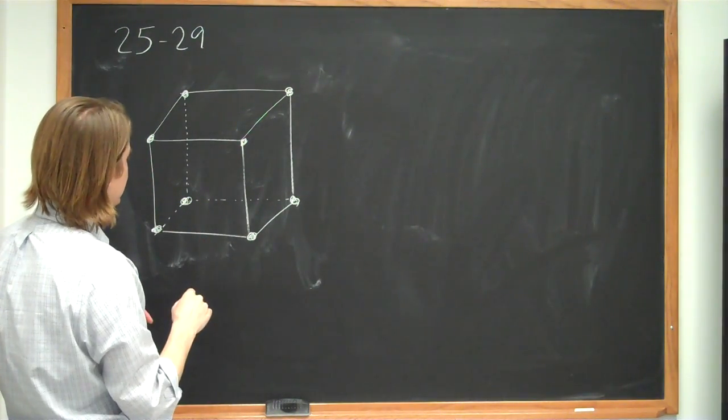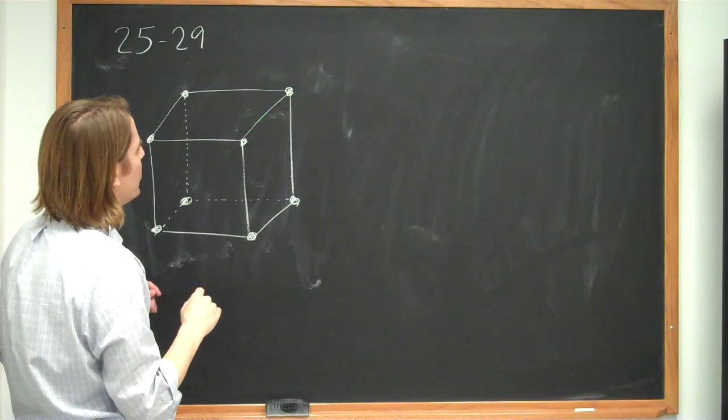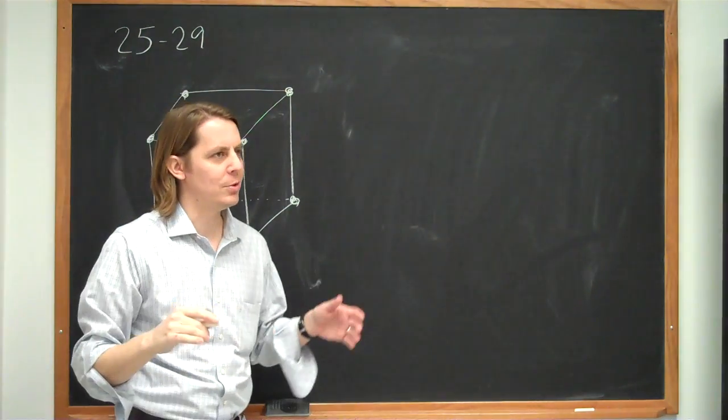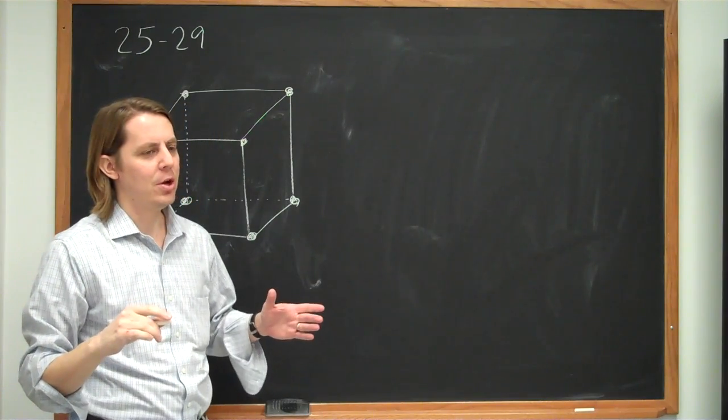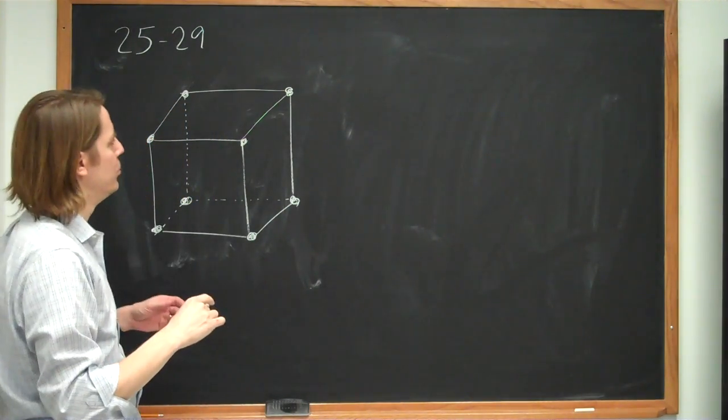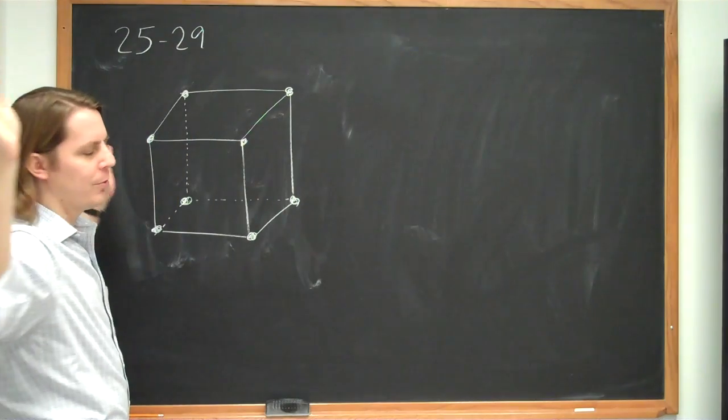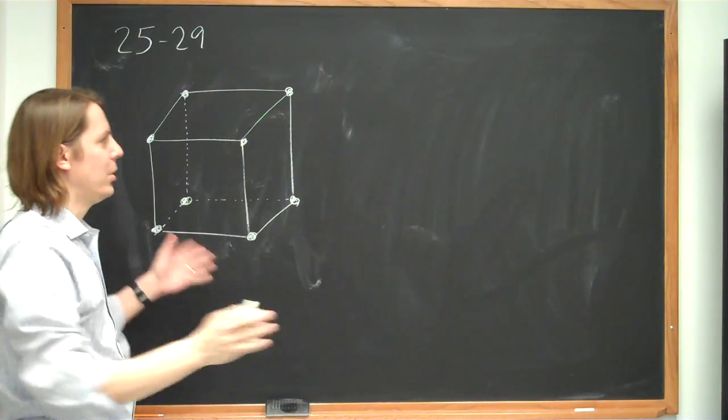So we have eight charges on this cube, and the question is how much work does it take to assemble them, which is the same as saying what is the potential energy of this distribution. First we imagine that all these charges are far away from each other at infinity, and we have to bring them together.